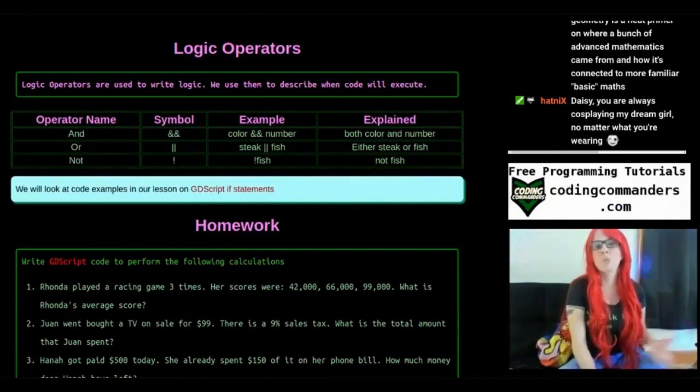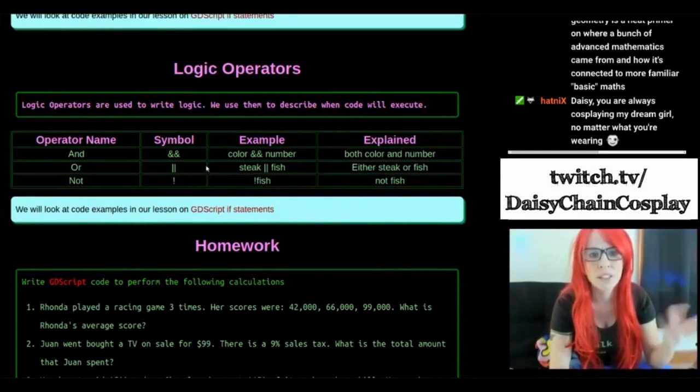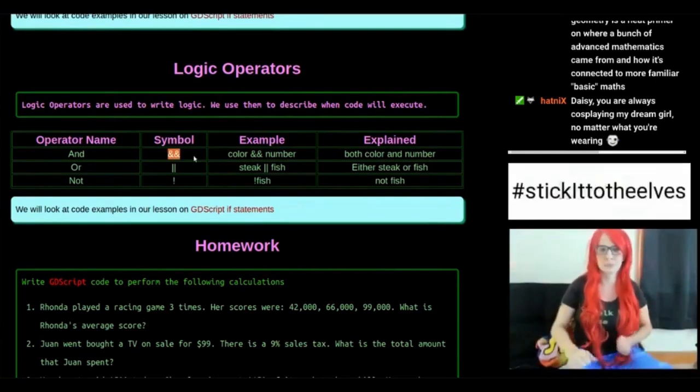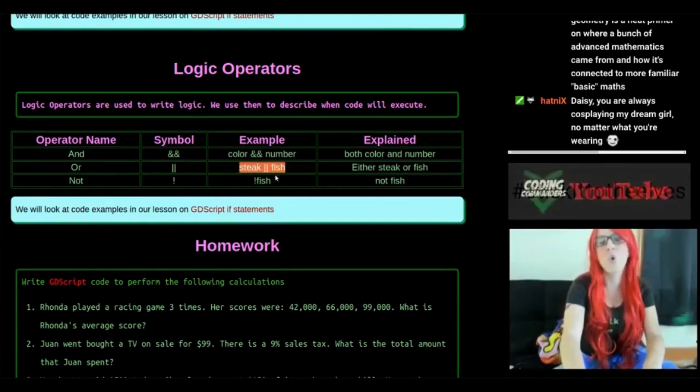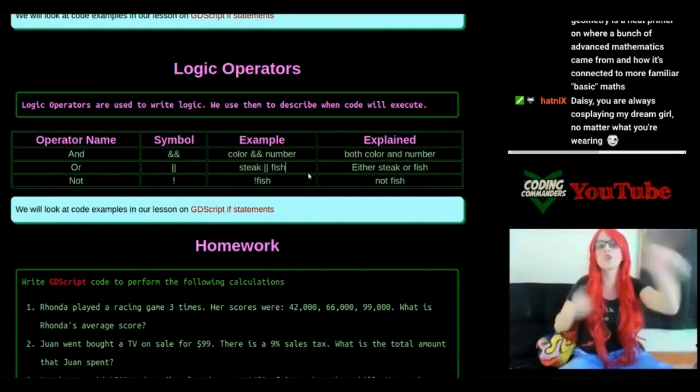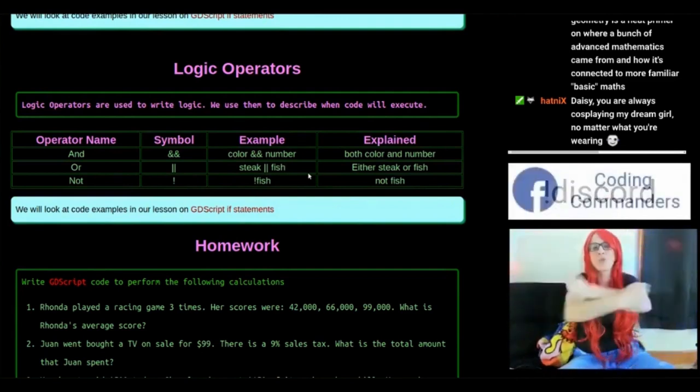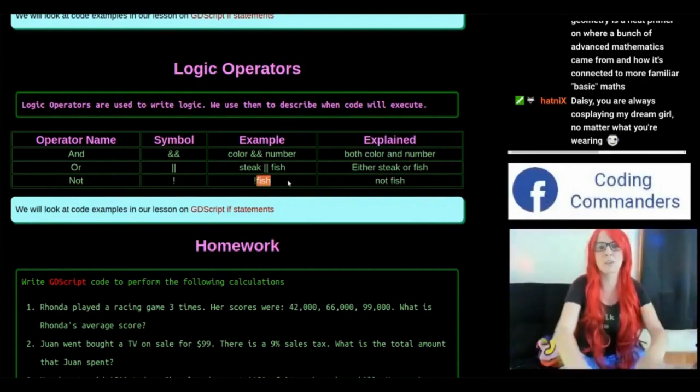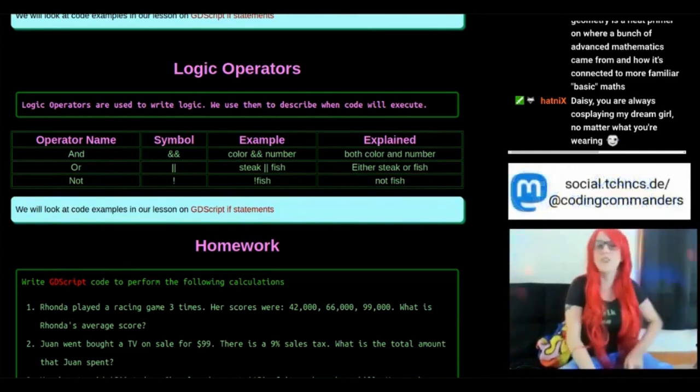Logic operators. Logic operators are used to write logic. We use them to describe when code will execute. So here's common logic operators. And that means both of them, color and number. That means color is true and number is true. Or steak or fish. That means you're either having steak or fish. For this to be true though, they can both be true or just one of them could be true. With and, they both have to be true. Color and number have to be true. For steak or fish, steak could be true, fish could be true, or they both could be true. Not fish means it has to be false. This code will execute if not fish. Fish must be false in order for the code to execute.